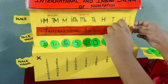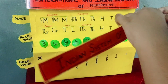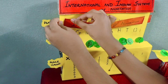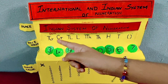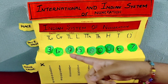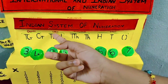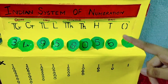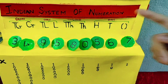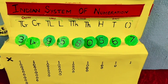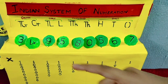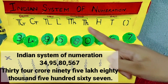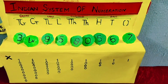Now let's see the Indian system of numeration. Now let's read together: 34 crore 95,80,567.